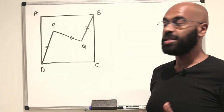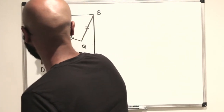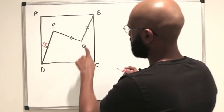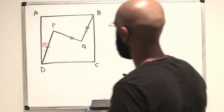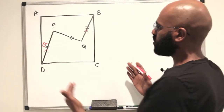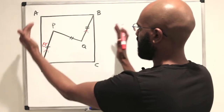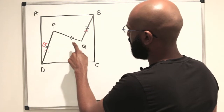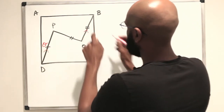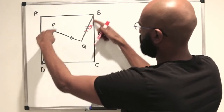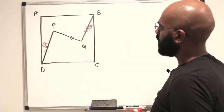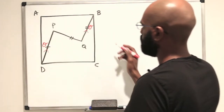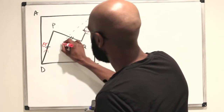Our next solution is going to be geometric. Here's our theta that we're trying to minimize. We'll look at symmetry: we have PD and QB of equal length and parallel. Because they're parallel, if one makes angle theta with AD then the other also makes angle theta. We'll exploit this symmetry by drawing in the diagonal BD.